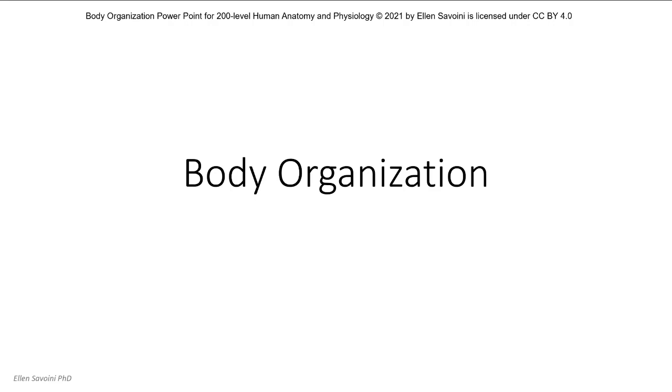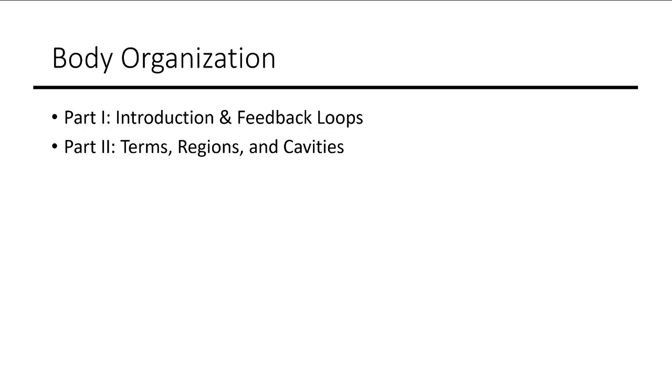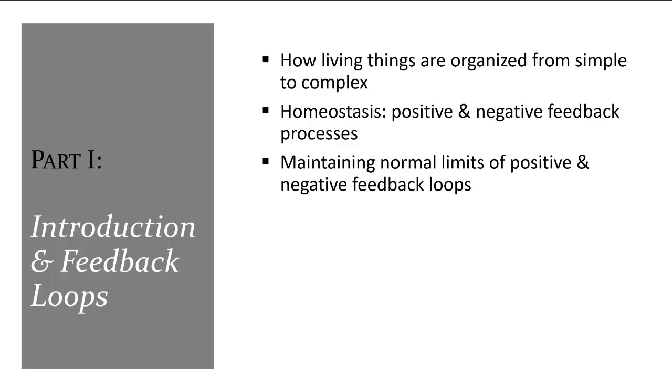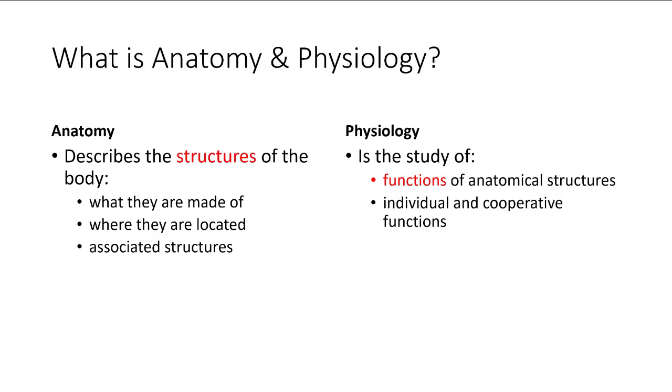We'll talk about body organization. There are two parts to this chapter. For part one, we're going to discuss how living things are organized from simple to complex. We'll go over the positive and negative feedback loops as well as how we maintain normal limits.